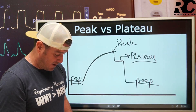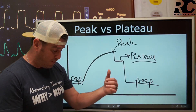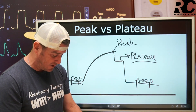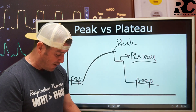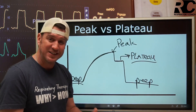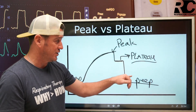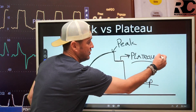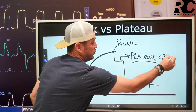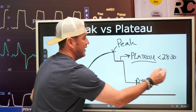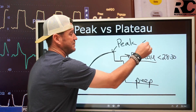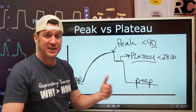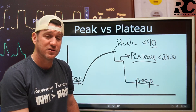Egan's says we want to keep plateau below 28 centimeters of water pressure. Levels greater than 28 centimeters of water pressure, alveolar damage from overdistention is likely. Remember, your peak is always going to be higher than your plateau. So if we want to keep our plateau less than 28 to 30, then our peak is obviously going to be higher than that. The general consensus is you're looking for peaks to stay below 40 centimeters of water pressure.